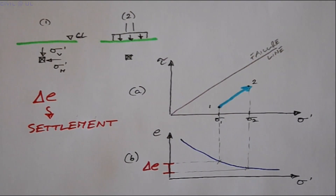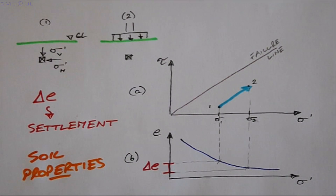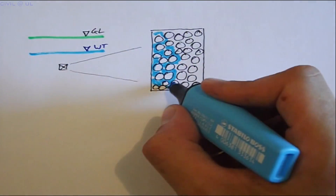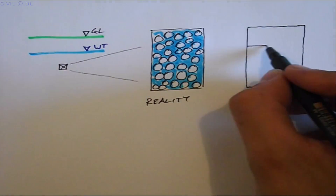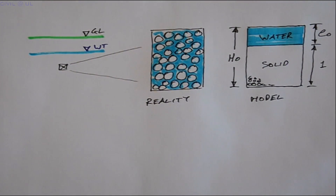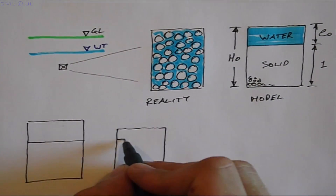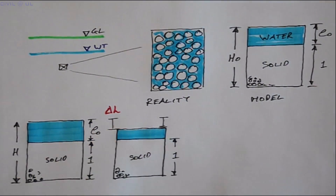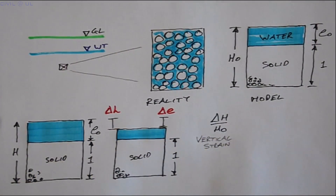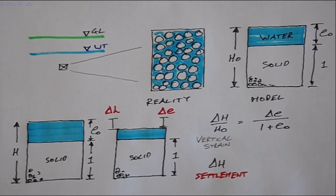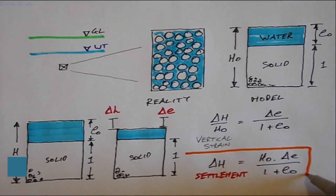The exact relationship can be established from the soil phase diagram introduced in our soil properties video. If we assume a saturated soil having a unit volume of solid particles, the soil has an initial volume equal to 1 plus E0 and an initial height H0. If the soil is subjected to the increase in stress from 1 to 2, it will undergo a change in height equal to delta H and a change in void ratio equal to delta E, as the water is squeezed out at a rate consistent with the soil's permeability. Therefore, delta H over H0 — the vertical strain — is equal to delta E over 1 plus E0. Or putting it another way, the settlement is equal to H0 times delta E all over 1 plus E0. And this is the essence of the settlement calculation.